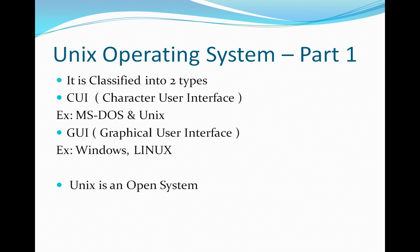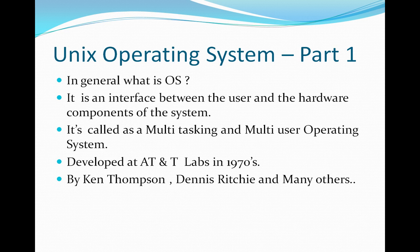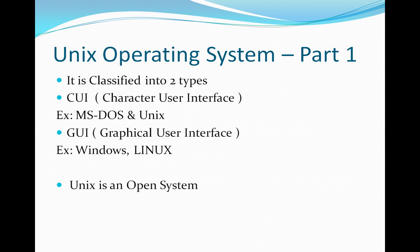To recap the UNIX introduction: we discussed what an operating system is, that UNIX is a multi-tasking and multi-user operating system, who the developers were, that it is also called system software, and that it is classified into two types — CUI and GUI — and is an open system.